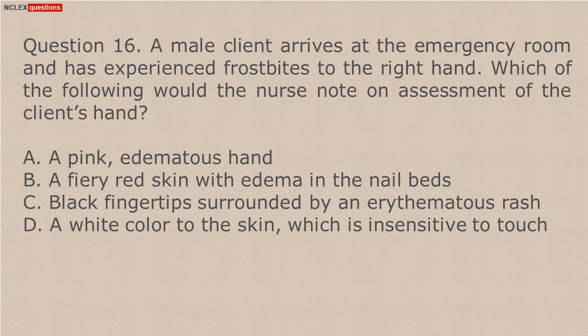Answer A. In a dark-skinned client, the nurse examines the lips, tongue, nail beds, conjunctivae, and palms of the hands and soles of the feet at regular intervals for subtle color changes. In a client with cyanosis, the lips and tongue are gray, the palms, soles, conjunctivae, and nail beds have a bluish tinge.